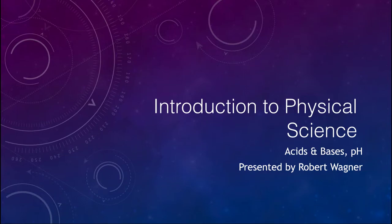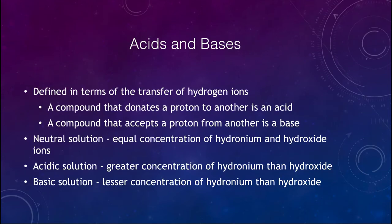Greetings and welcome to the introduction to physical science. In this lecture we are going to talk about acids and bases, and different types of materials and liquids, and how they relate to pH as a measure of the acidity of a specific object. So let's first define what we mean by an acid or a base.